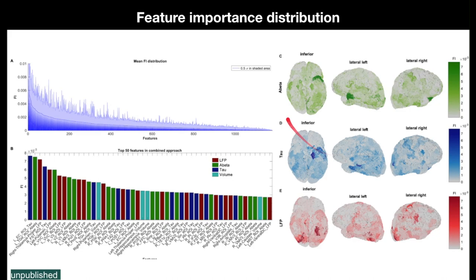Regarding feature contribution to classification: the contribution of the simulated features reveals that the bilateral local field potentials and bilateral thalami are decisive for classifying mild cognitive impairment against Alzheimer's disease. This could indicate that there is actually a change in the dominant frequency of local field potentials in the bilateral thalami that is involved in the mechanisms of the disease.